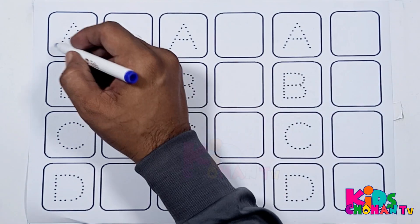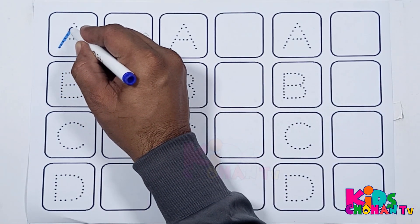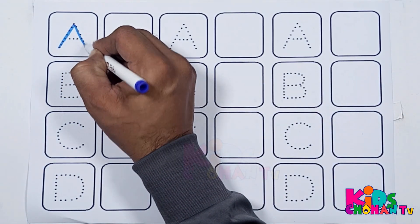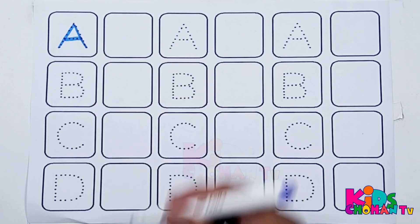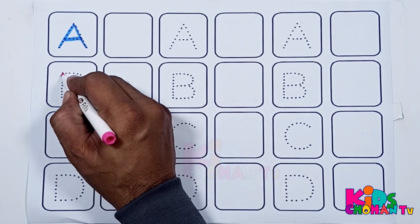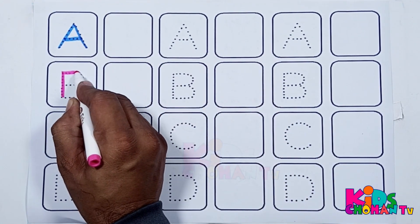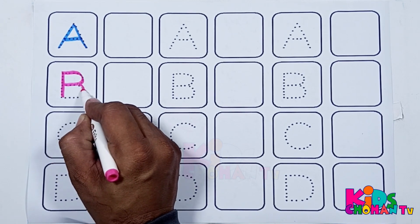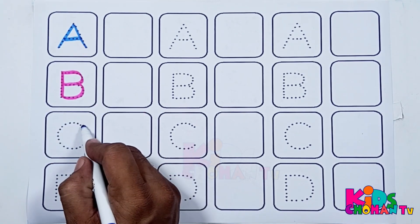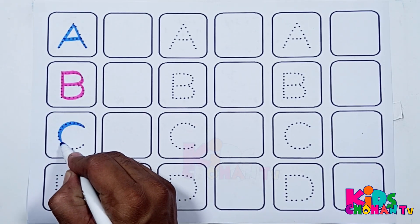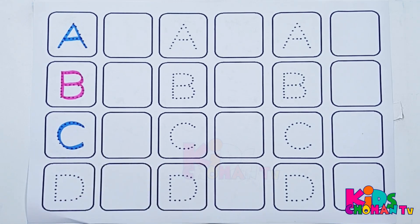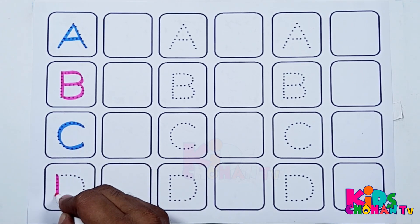Blue color, kids, we are dressing letter A. Pink color, this is letter B. Kids, we are dressing letter C. This is letter D.